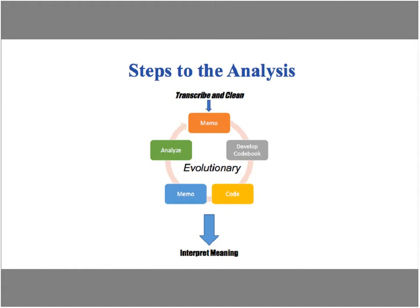In qualitative data analysis, unlike quantitative, the process is cyclical and can evolve. We transcribe and clean the data, memo, develop a code book, code, memo some more, analyze, and go back to memoing. Particularly when emerging themes appear, we member check those themes and go back to code and memo more, starting the process again. This cyclical, forward-and-backward movement is the best way to determine findings in qualitative work — much more cyclical than the linear, one-way process in quantitative analysis.